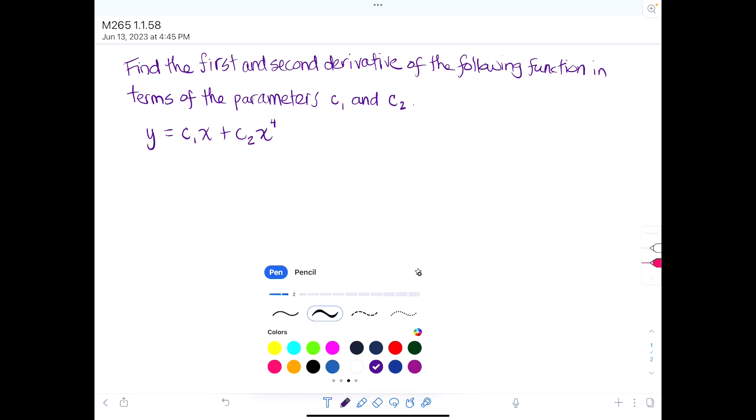And so when we differentiate this, we will get y prime is equal to c1 plus 4 times c2 x cubed.